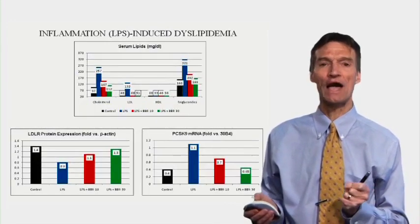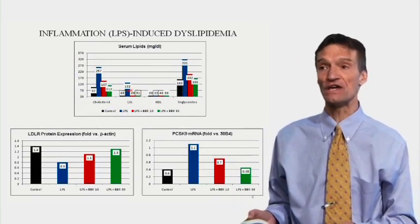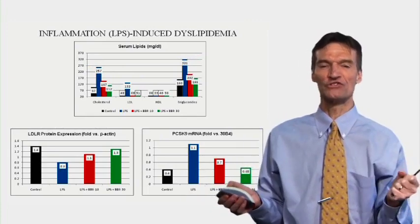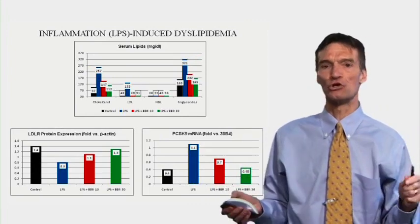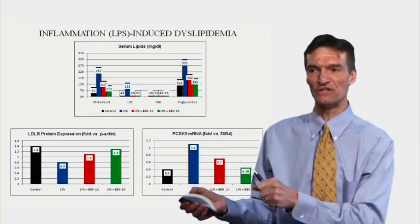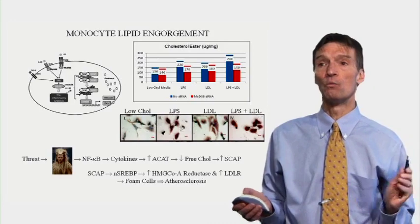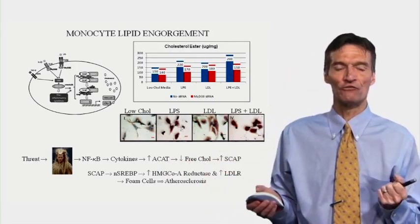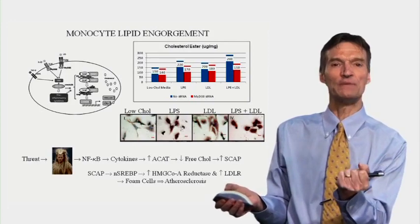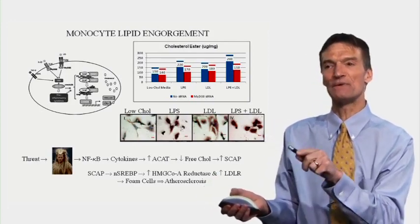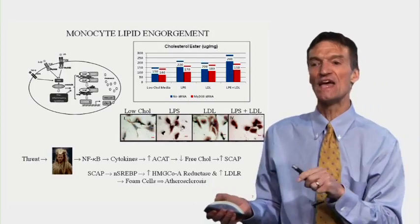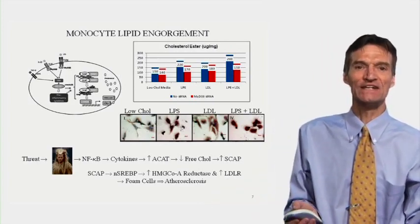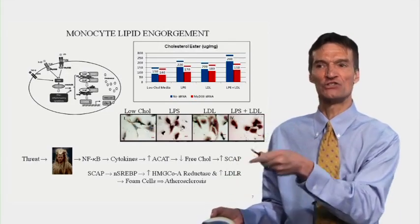Inflammation leads to hyperlipidemia — upticks in cholesterol, LDL, and triglycerides. The cells of the periphery make more LDL receptors, whereas the liver makes fewer. With inflammation, our cells will engorge with lipids, which we can block with berberine. Cholesterol esterification within our cells increases, so the level of free cholesterol in the cell is lower. SCAP senses this, sends sterol regulatory element binding protein to the nucleus, and we're inappropriately making LDL receptors, promoting cholesterol generation and egress from the liver into peripheral cells such as our white cells, mediating atherosclerosis.